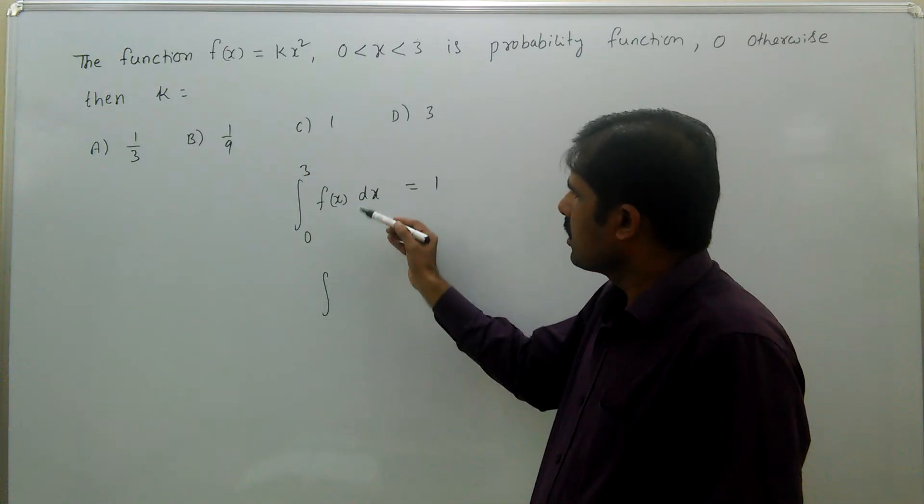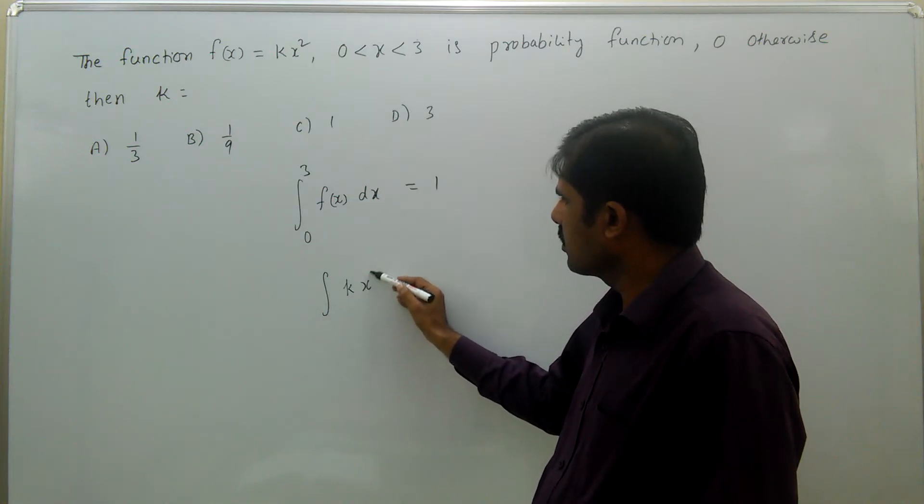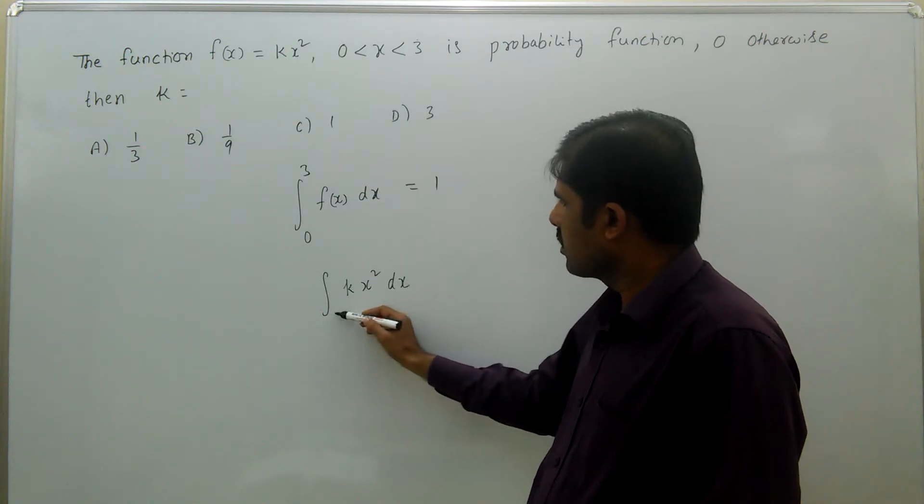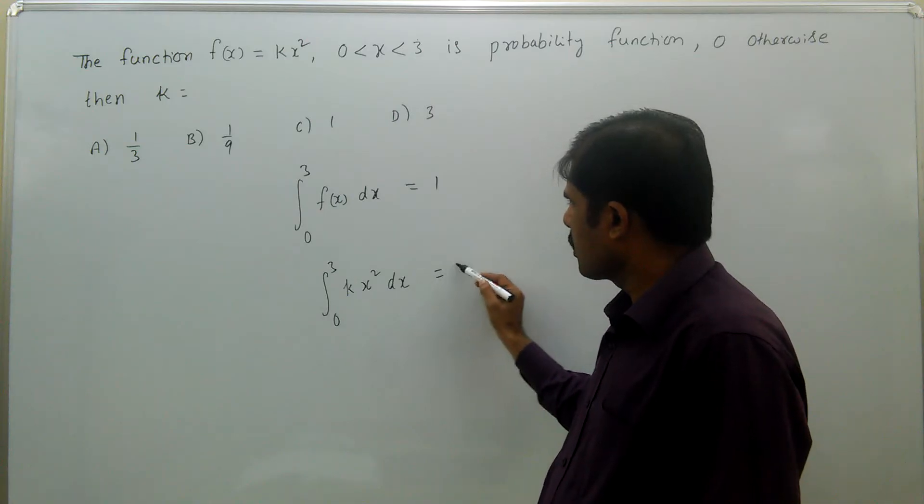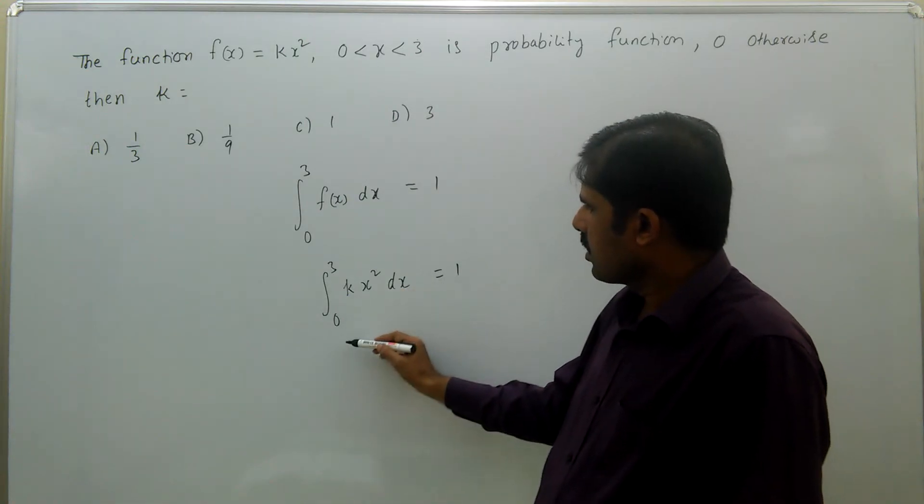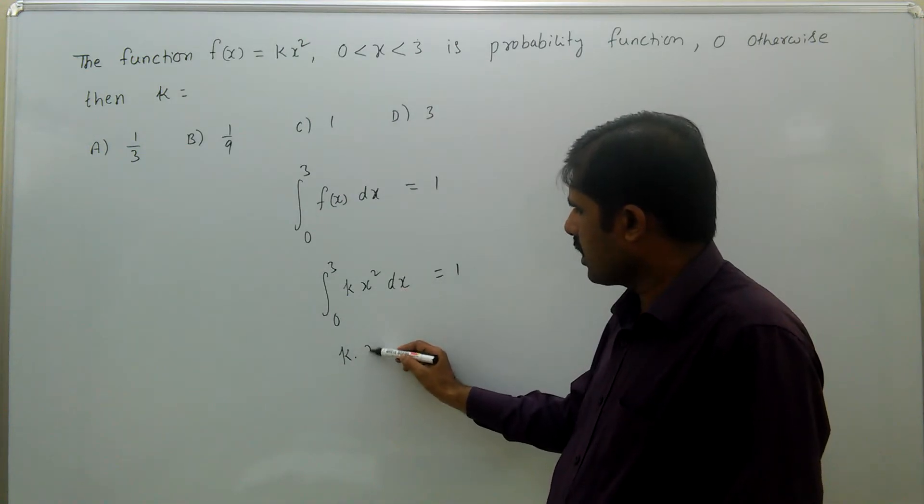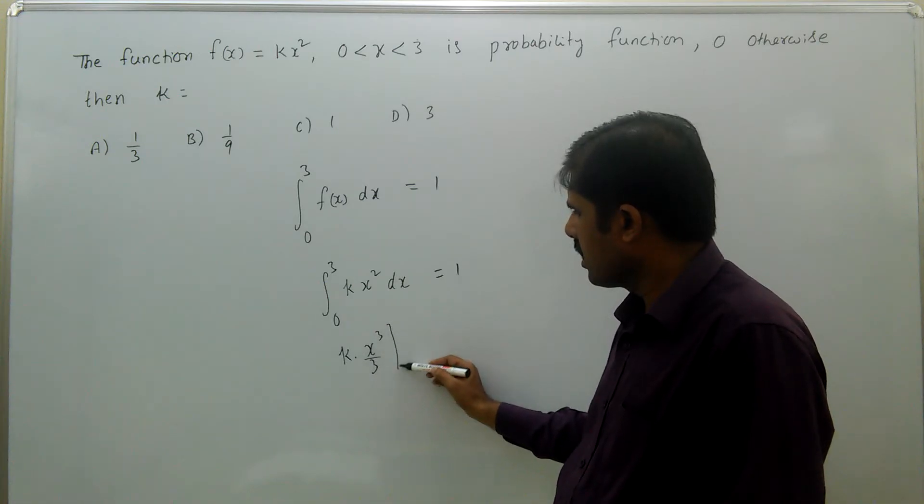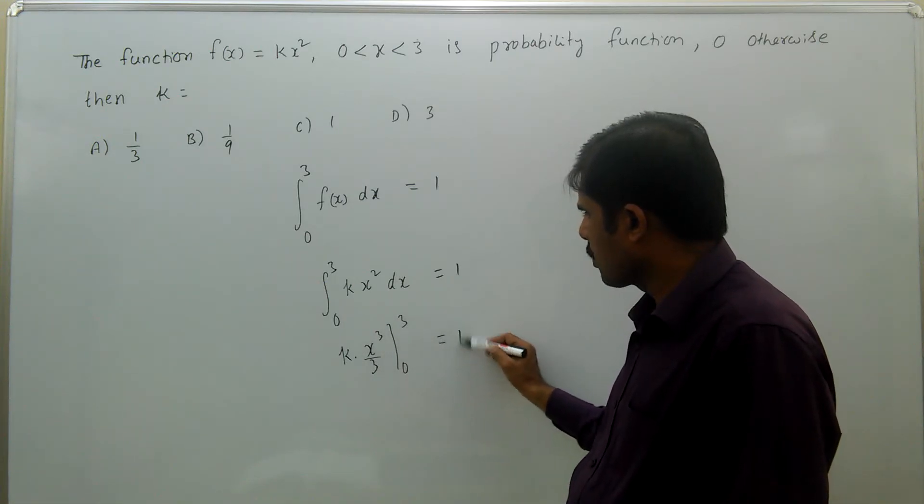That means integral of kx²dx from 0 to 3 equal to 1. That means k times x² integration is x³/3, limits 0 to 3, equal to 1.